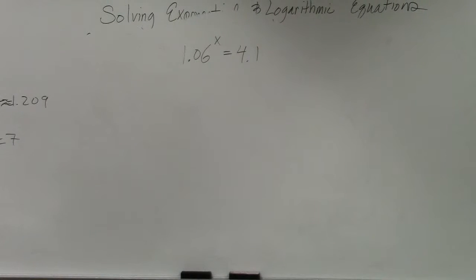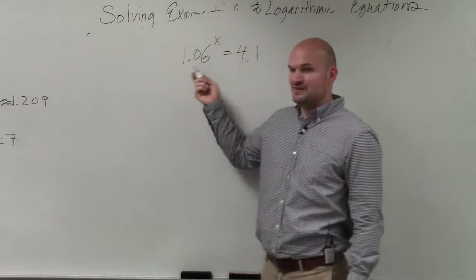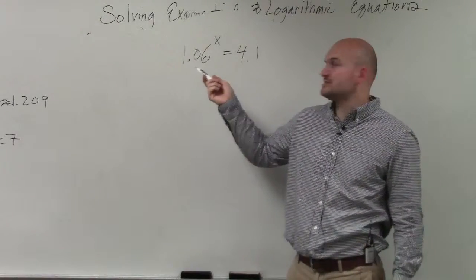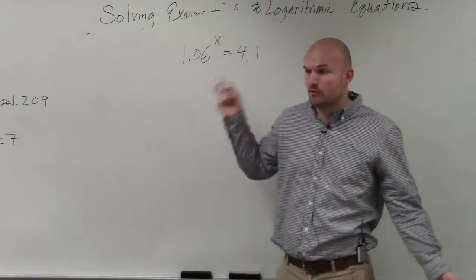But in this case, using the one-to-one property is not really going to be much help. I don't know if I was going to take 1.06, I don't know what 1.06 raised to what number is going to give me 4.1, right? But 4.1.